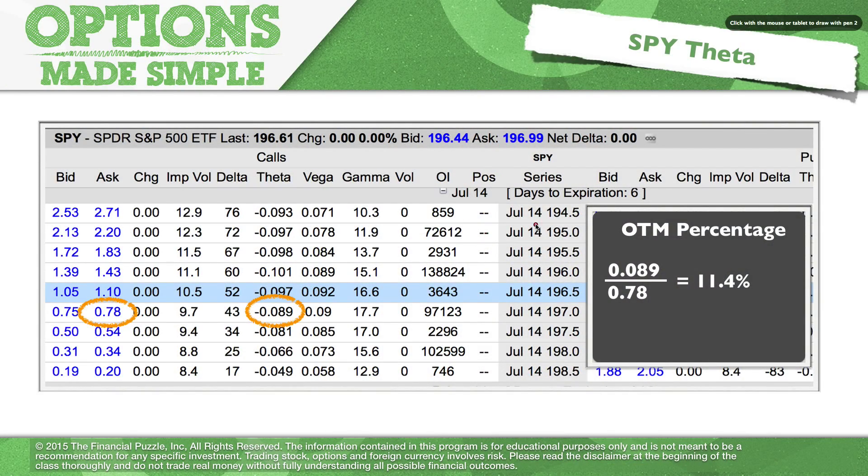Take a look here at the spiders, same situation. Look at the 197 call option here, and our time decay, our theta, is 8.9, so it's almost nine cents a day. And look at your option price. Your price is 78 cents.